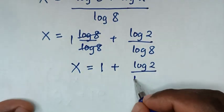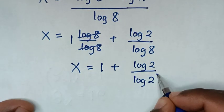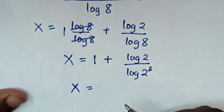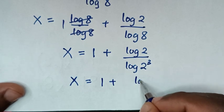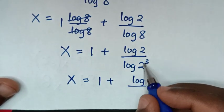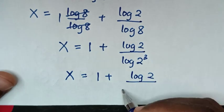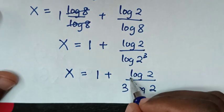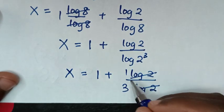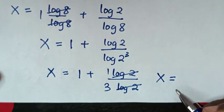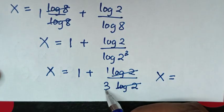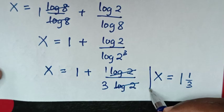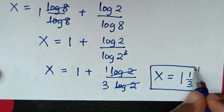Now log of 8 is the same as log of 2 power 3. In the next step, the power of 3 moves to the front, so the denominator becomes 3 log of 2. Then log of 2 cancels with log of 2, giving 1 over 3. Therefore x is equal to 1 plus 1 over 3, which is 1 and 1 over 3. So this is the final answer for the value of x.